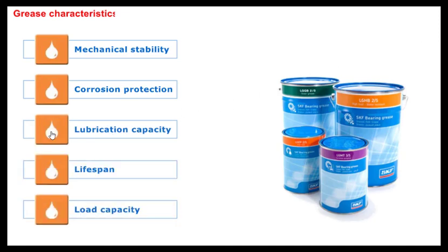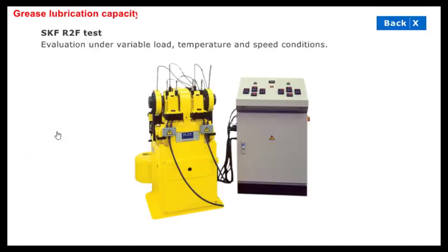In this test, the lubrication capacity of the grease under variable load, temperature, and speed conditions is evaluated. Two specially designated spherical roller bearings, 22312 EWMA-C3P VQ420, are submitted to specific load, temperature, and speed conditions. After the first 24 hours at room temperature, wear is measured.